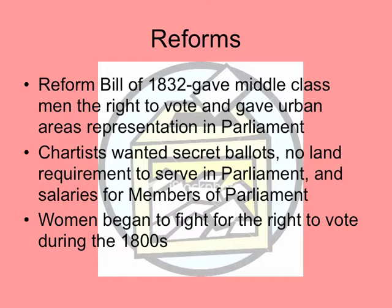The reforms start with the Reform Bill of 1832, which gives middle class men the right to vote, and it gives urban areas representation in Parliament. Up to that point, it was only landowners and districts that were represented, and the cities had no districts because they didn't really have landowners. You do get a reform group known as the Chartists, and they want secret ballots, no land requirement to serve in Parliament, and salaries for members of Parliament. Secret ballots prevent harassment about voting choices. No land requirement opens it up for everybody to serve, even the middle class in the city. Salaries make it equitable for everybody to serve — if you're not being paid, you have to be rich to do it, otherwise your family will starve.